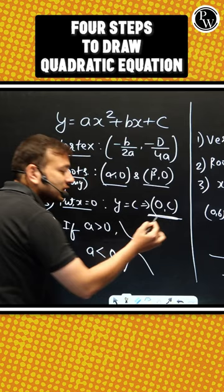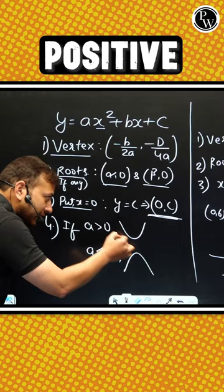Now, see the coefficient of x squared. If it is positive, it will be upwards. If it is negative, it will be downwards.